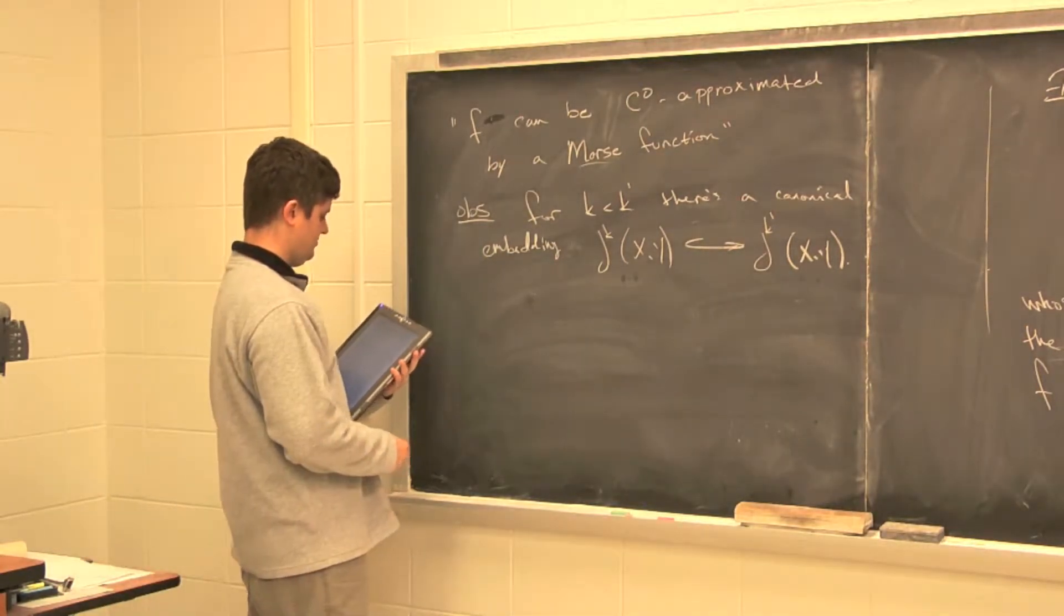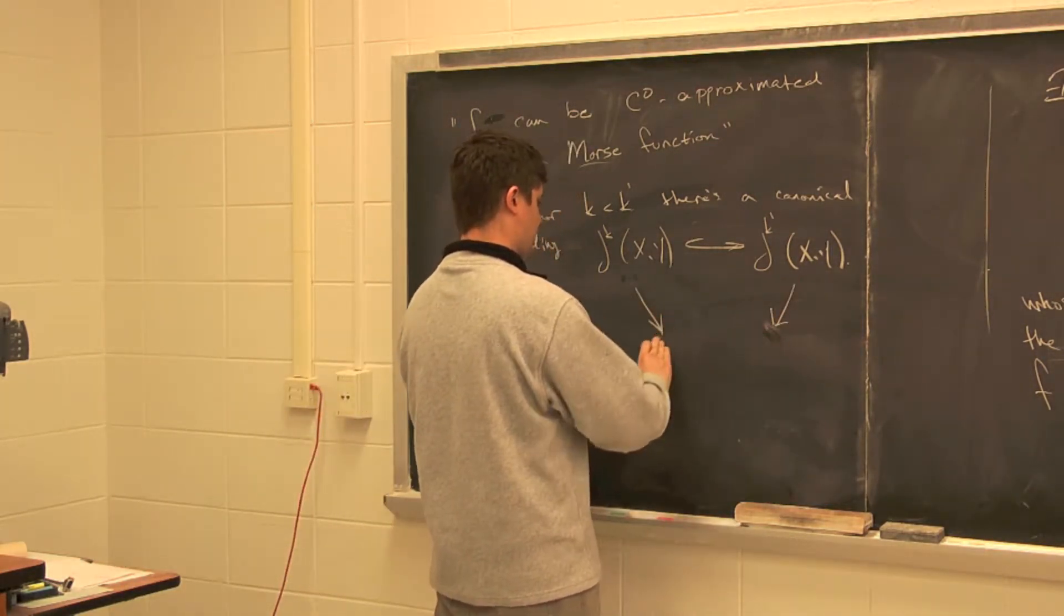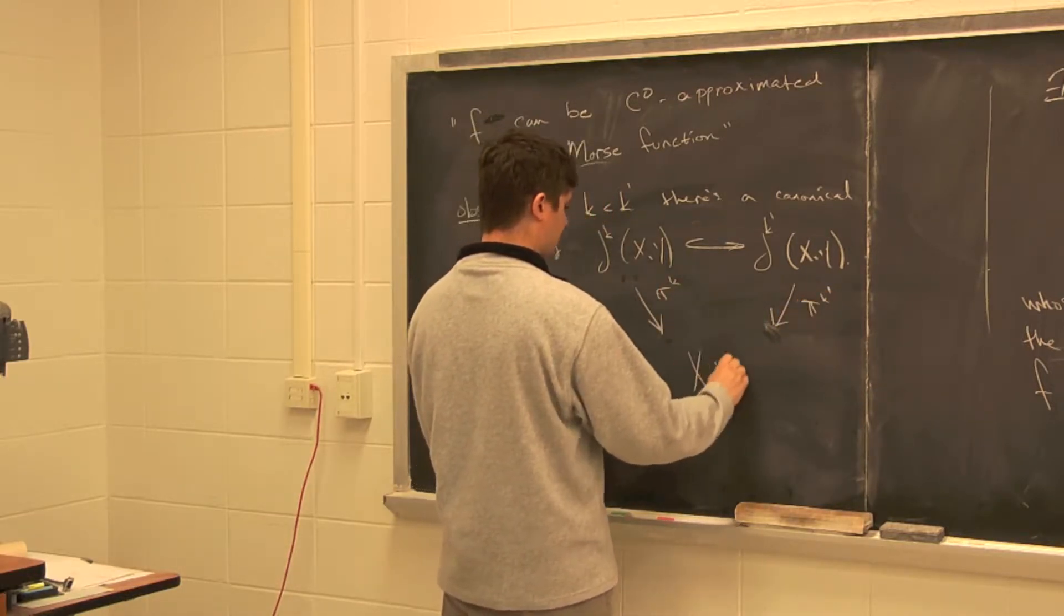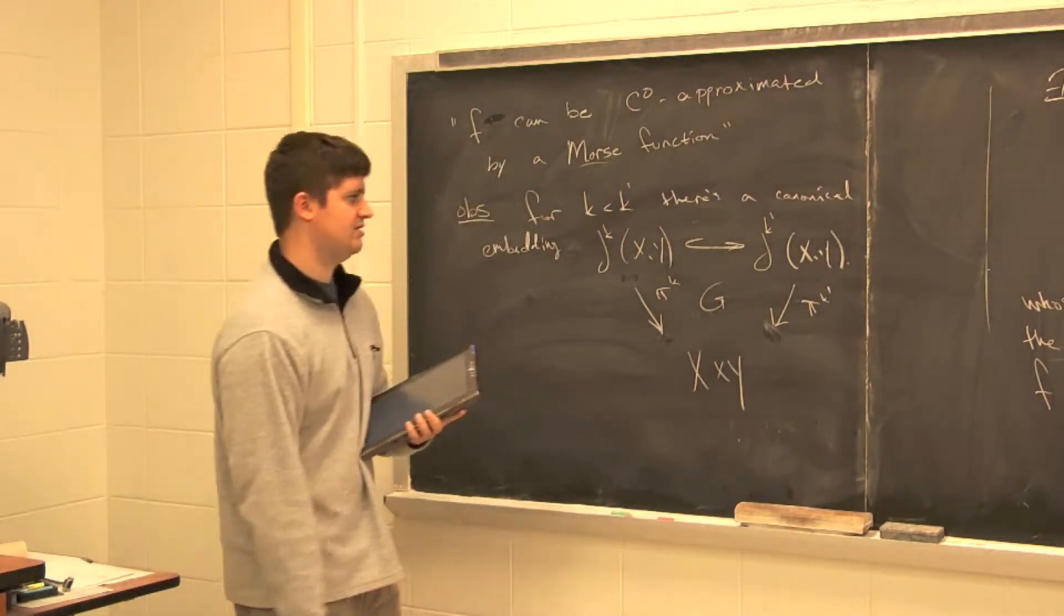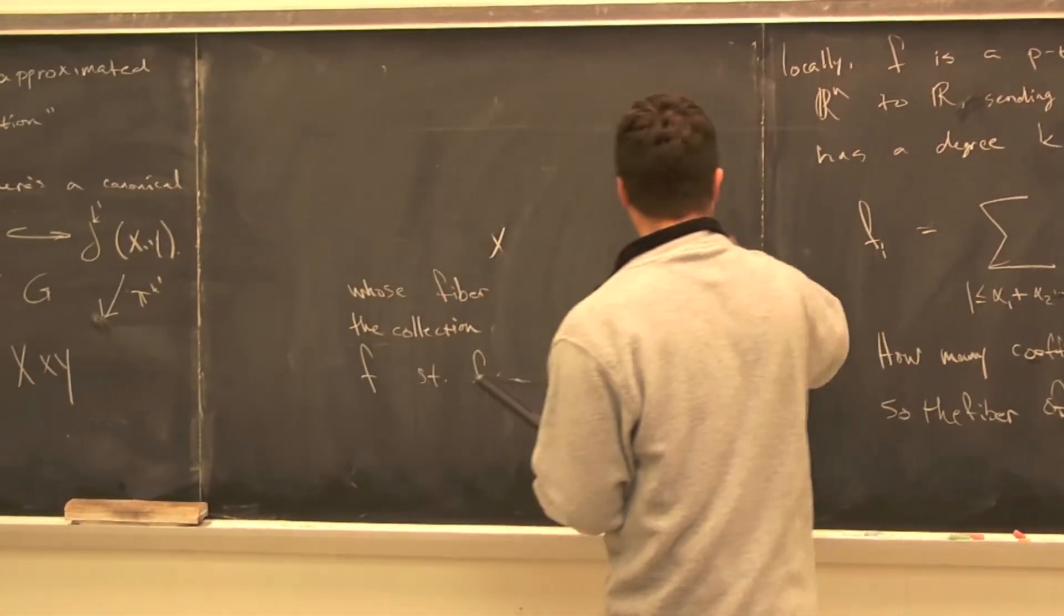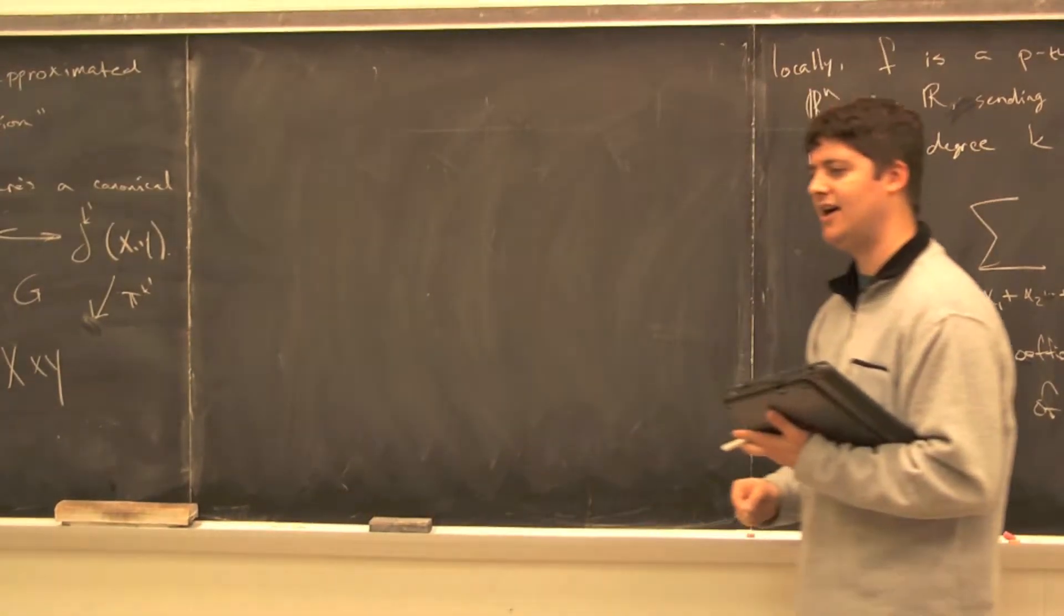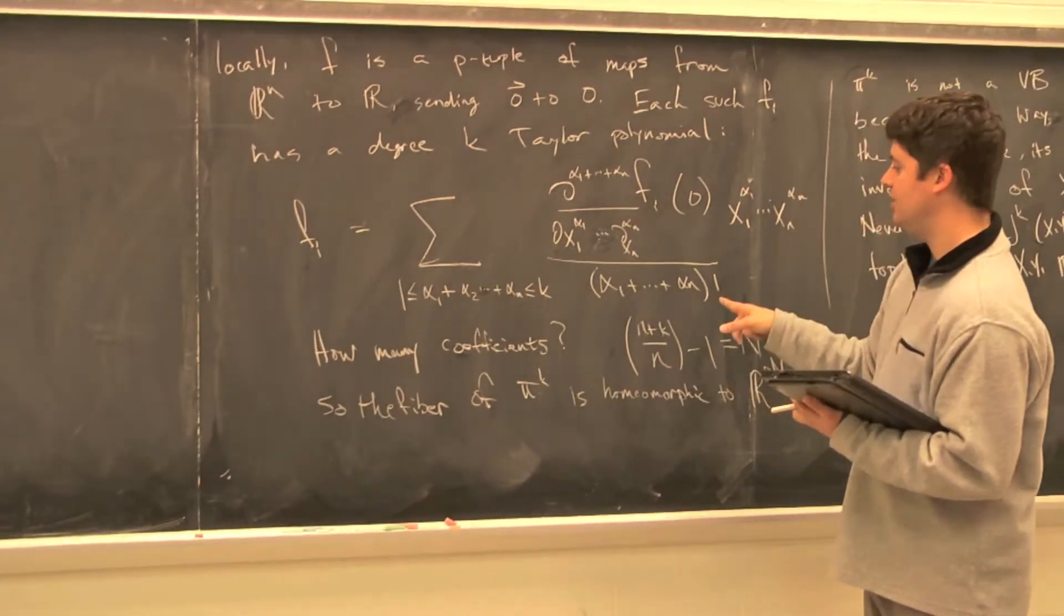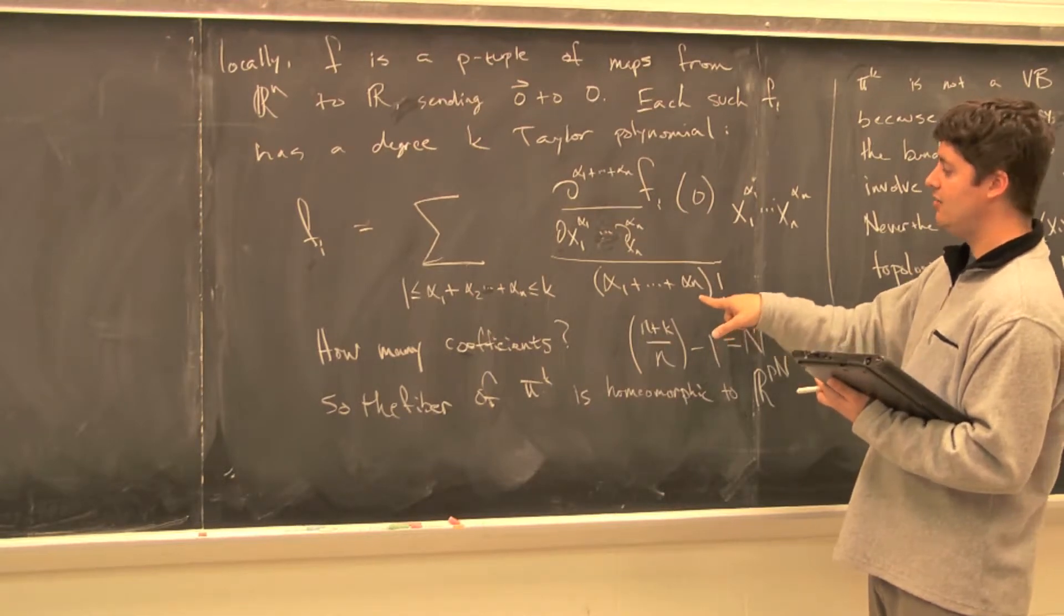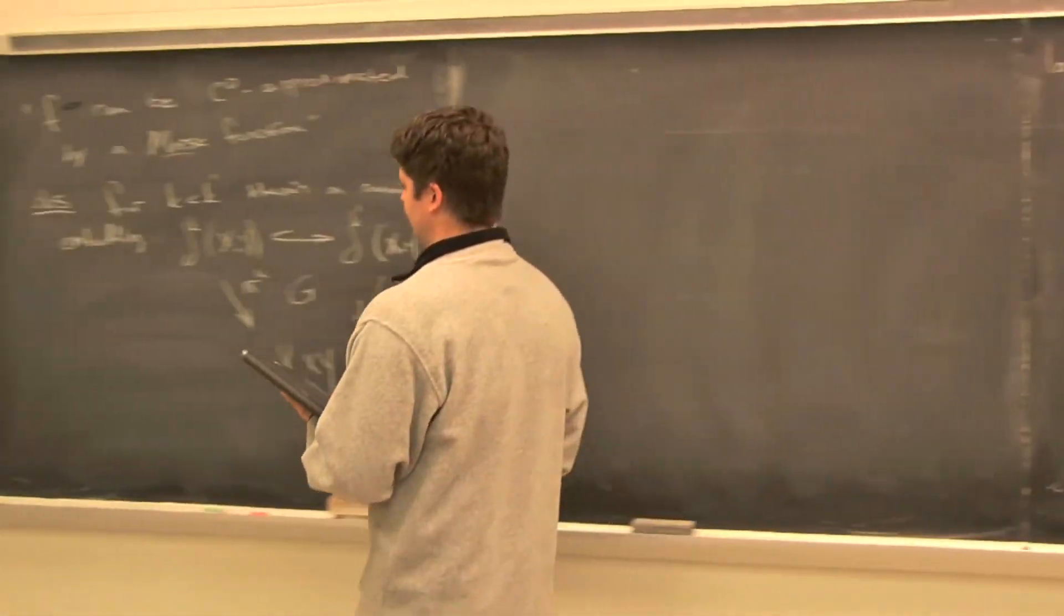It respects π_k and π_k'. So I should probably draw what I'm trying to say. You've got X cross Y. And this diagram commutes.